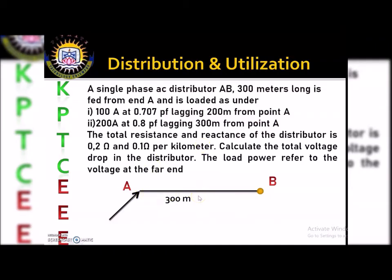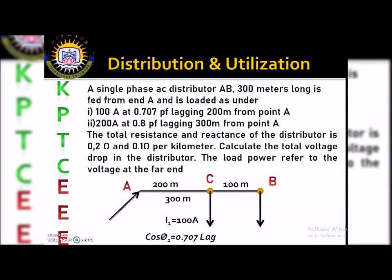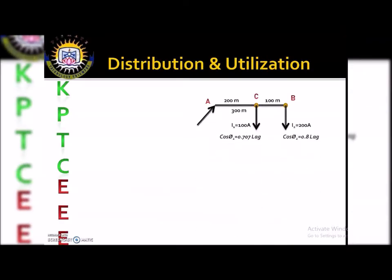So we have one tapping point at 200 meters distance with a value of 100 amperes at 0.707 power factor lagging. The second tapping is at 300 meters — that is point B — with 200 amperes at 0.8 power factor lagging. This is the diagram we need to analyze to solve the problem.